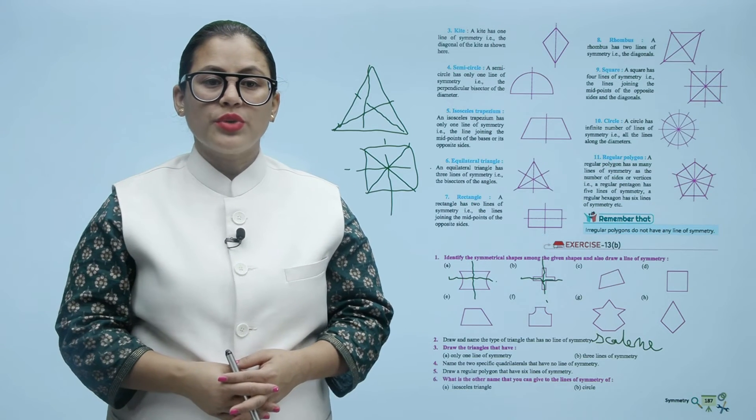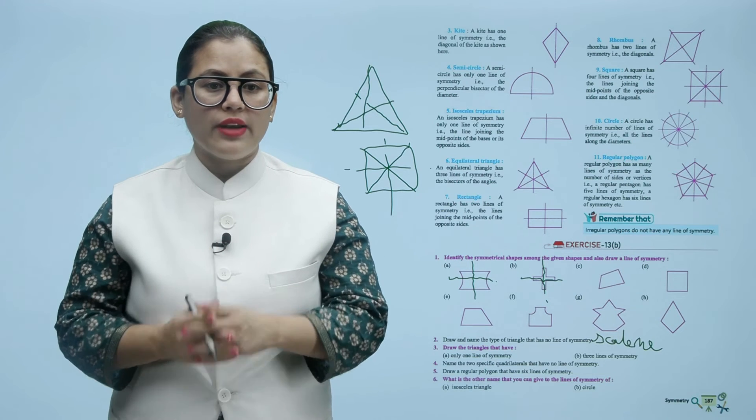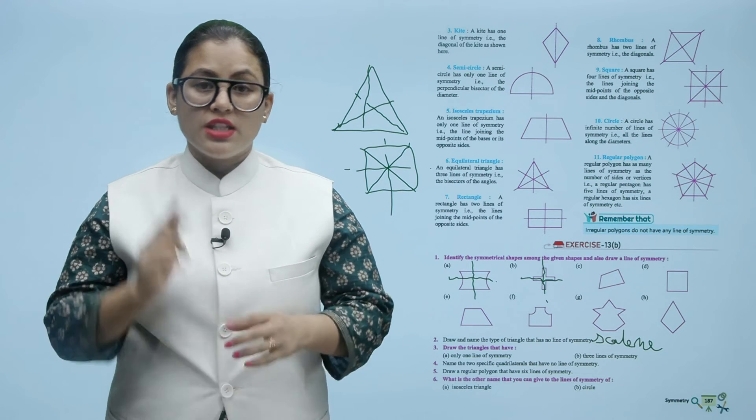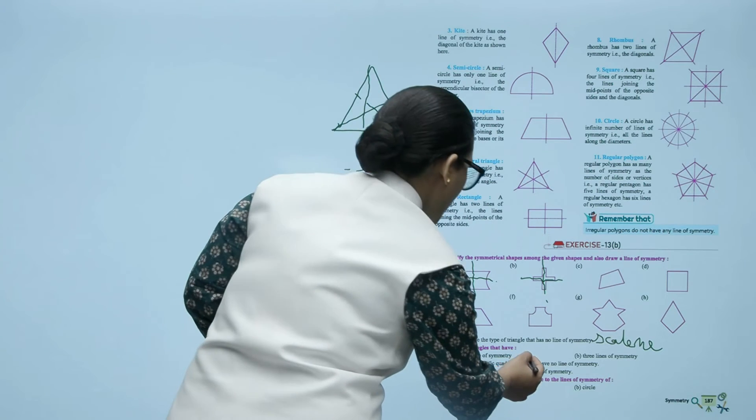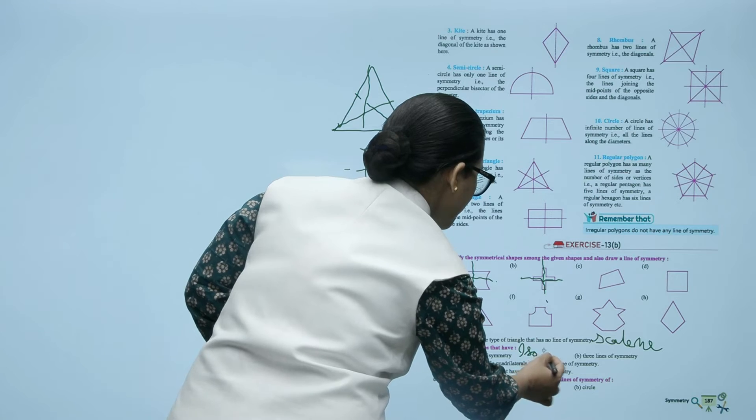Question number 3: Draw the triangle that has only one line of symmetry. An isosceles triangle has one line of symmetry.